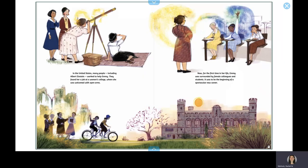In the United States, many people, including Albert Einstein, worked to help Emmy. They found her a job at a women's college, where she was welcomed with open arms. Now, for the first time in her life, Emmy was surrounded by female colleagues and students. It was to be the beginning of a spectacular new career.